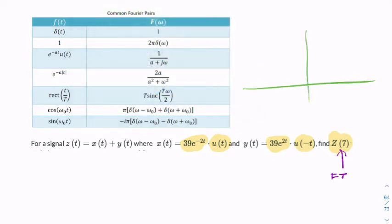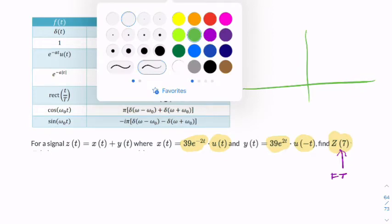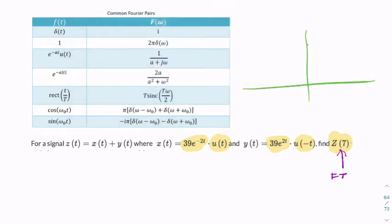So what does X of t look like? So X of t is a decaying exponential. It's a one-sided decaying exponential that starts at 39. So it would be something like that, where that value is 39. That's t. And for negative time, it's zero because we're multiplying by a unit step.